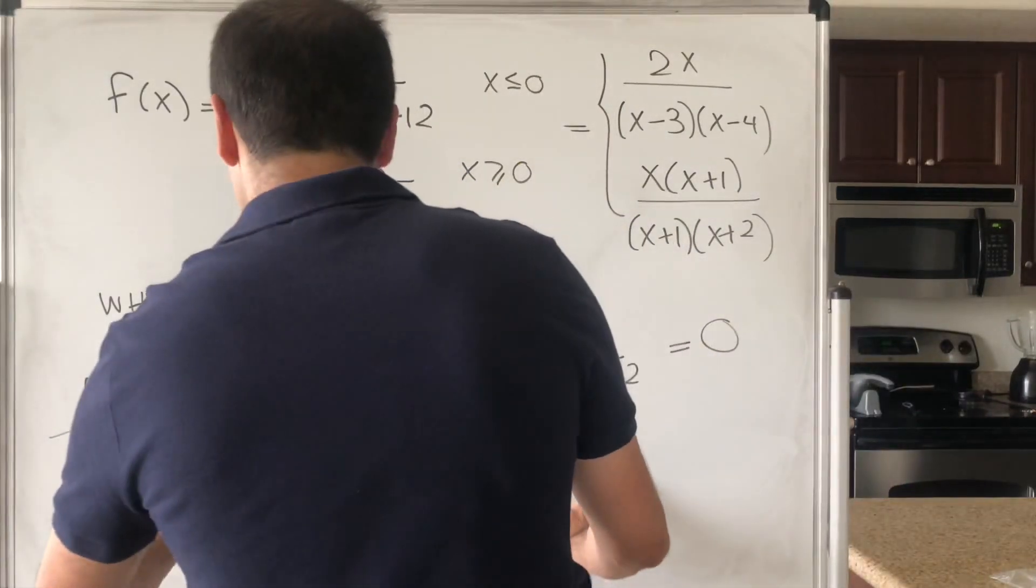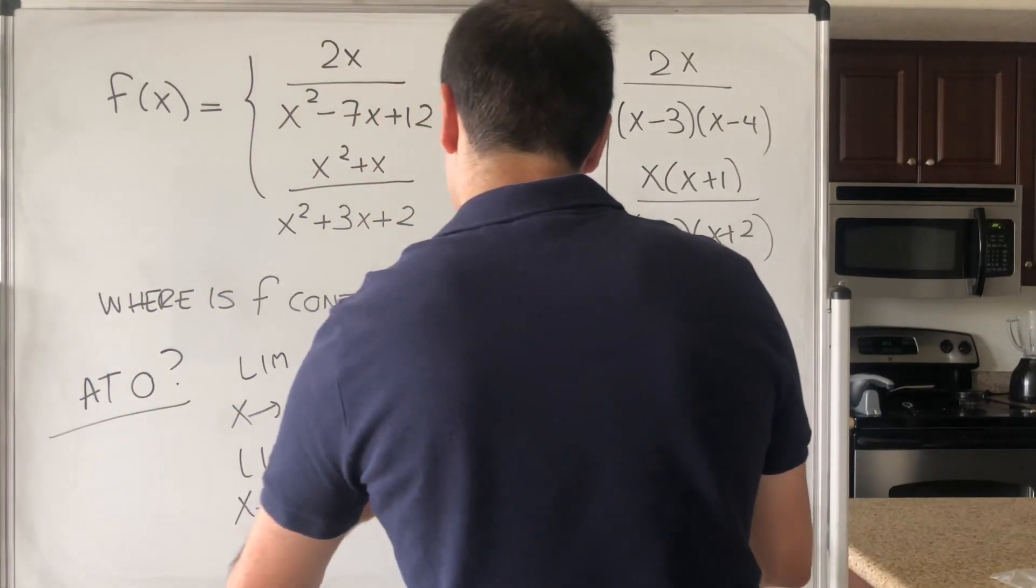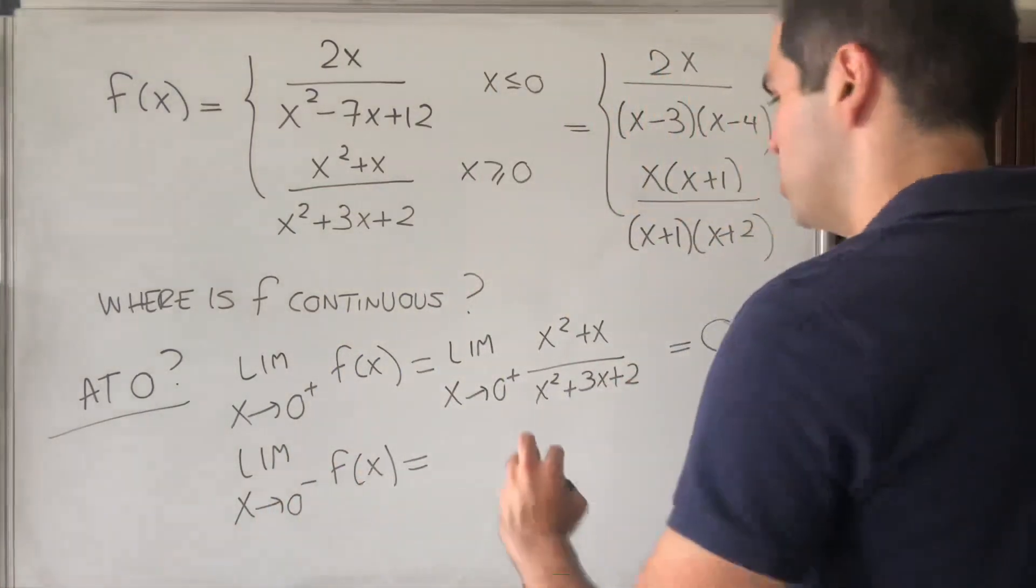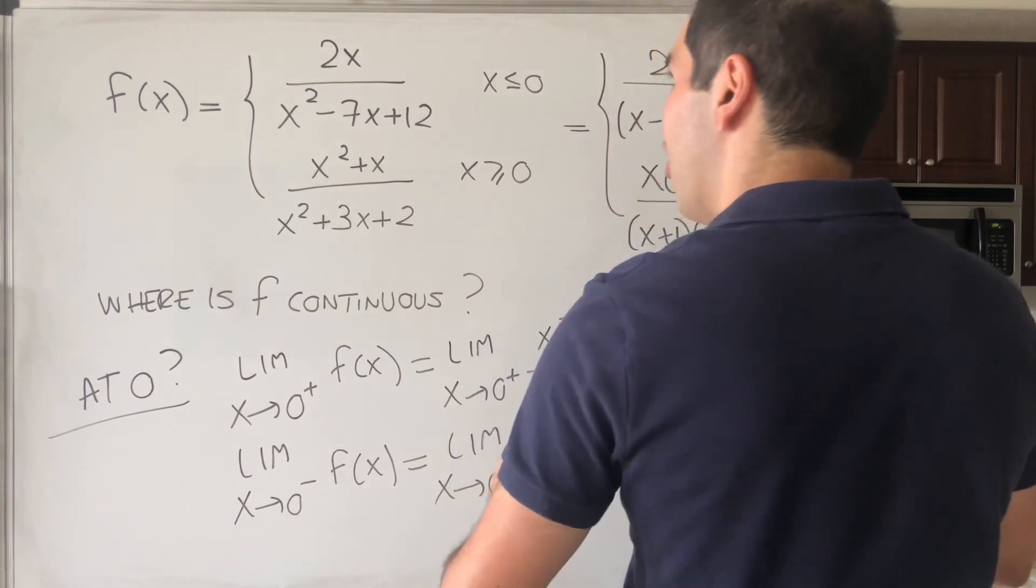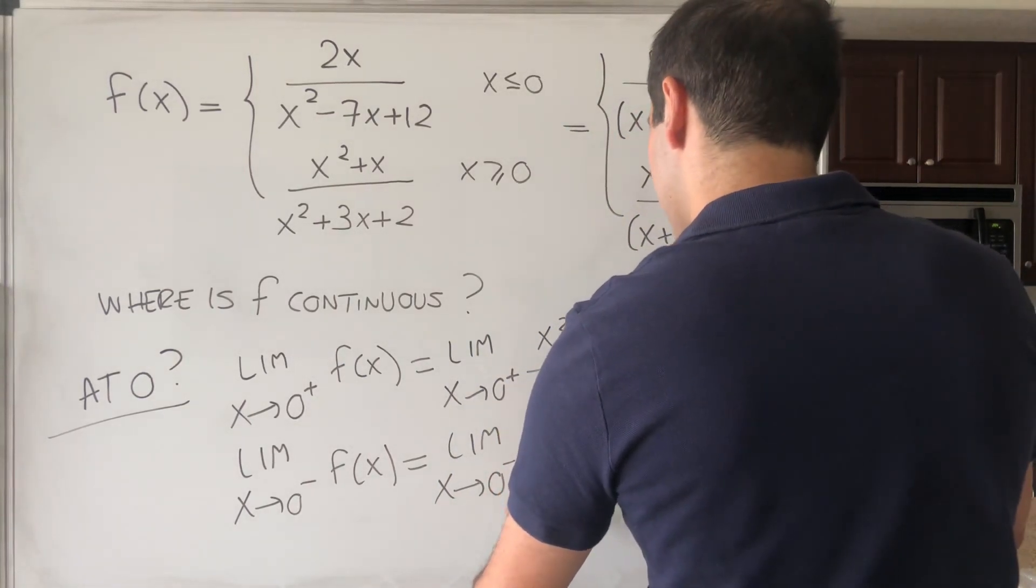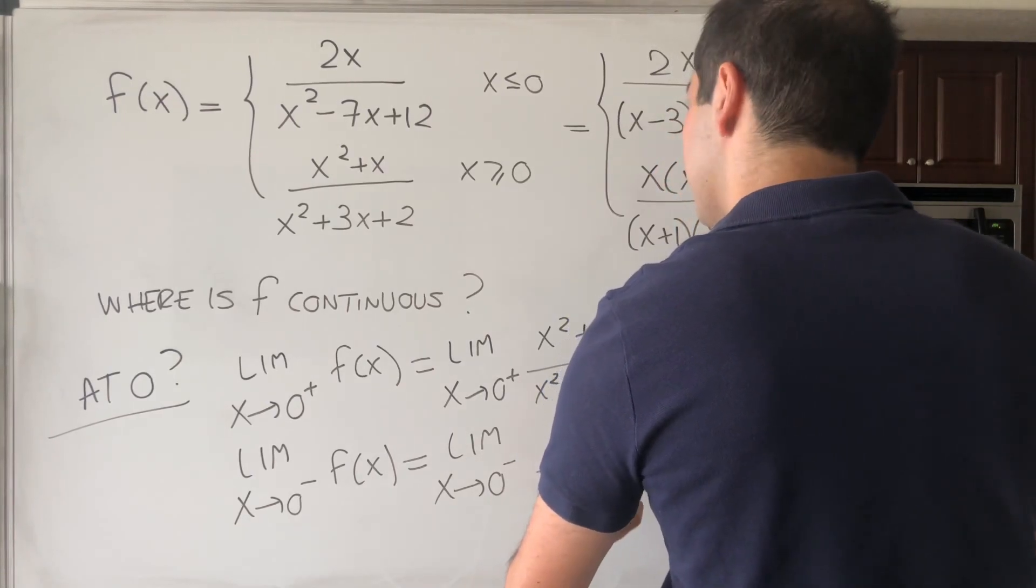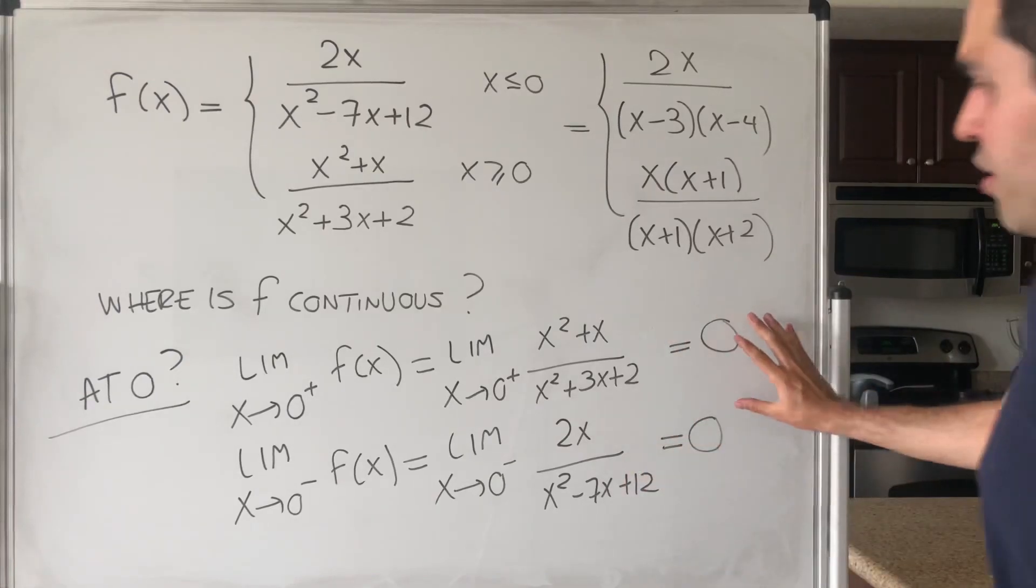And finally, the limit as x goes to 0 minus of f of x. You just play the same spiel. So limit x goes to 0 minus of 2x over x squared minus 7x plus 12, and that also equals 0.